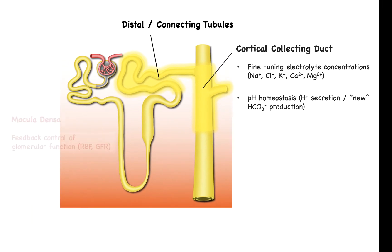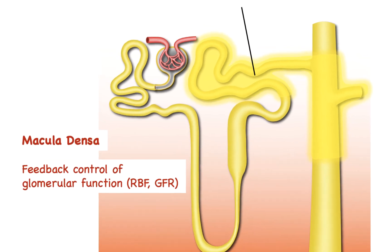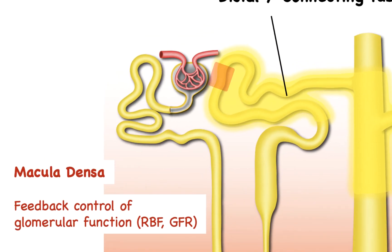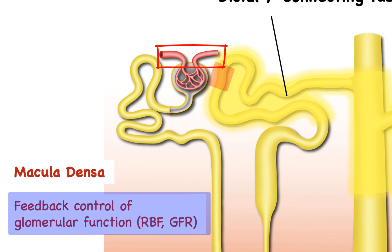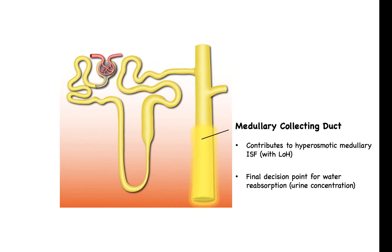In addition to these nephron segments, there is a specialized region of cells in the distal tubule called the macula densa. Physically, based on the orientation of the nephron, the macula densa cells are located in very close proximity to the afferent and efferent arterioles. The macula densa exerts feedback control onto these arterioles for the purpose of regulating renal blood flow and the glomerular filtration rate. The final nephron segment is the medullary collecting duct, located deep within the renal medulla.